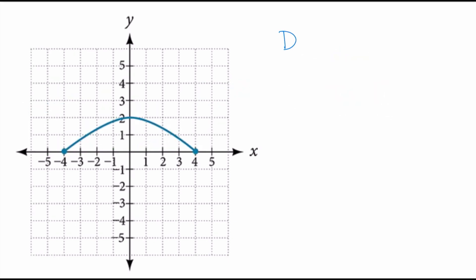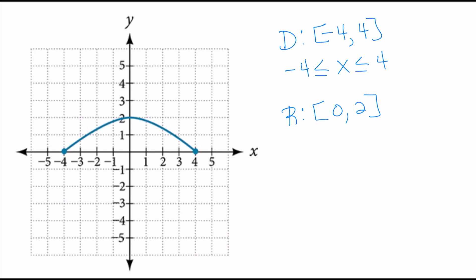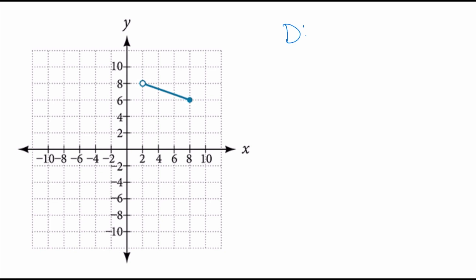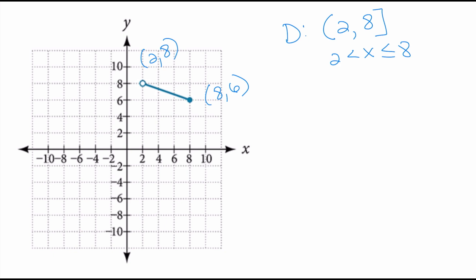Go ahead and try this problem on your own. The domain is from negative 4 to positive 4, so x is greater than or equal to negative 4 and less than or equal to 4. The range is actually fairly easy — it goes from 0 to positive 2, including both 0 and 2. In this next case, from left to right, there's a clear beginning and a clear end: starting at x equals 2 with an open circle, going all the way to x equals 8 which is included. So 2 is less than x, less than or equal to 8.